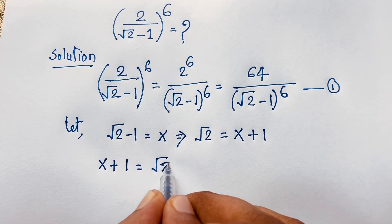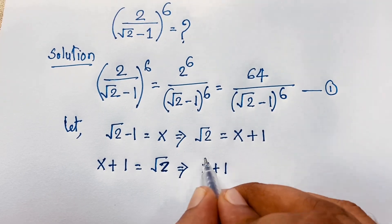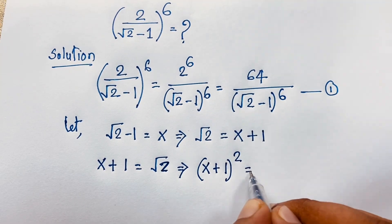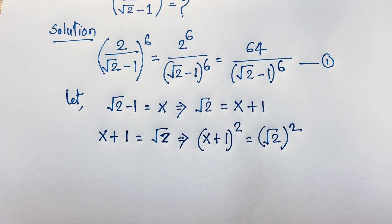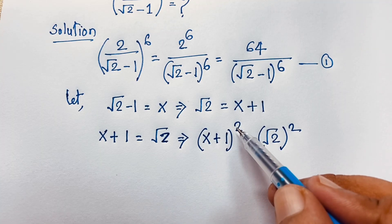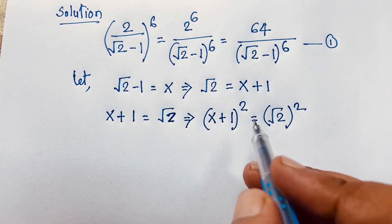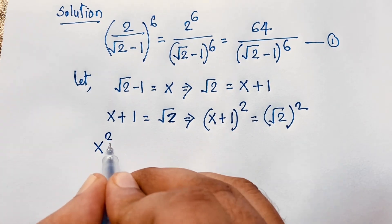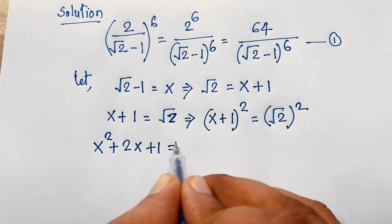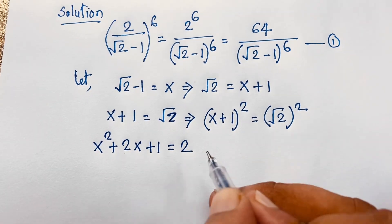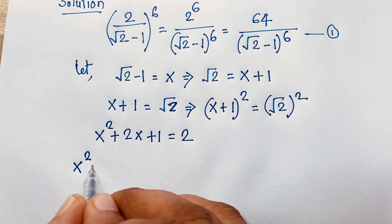Now I square both sides: (x plus 1)^2 equals (√2)^2. Using the formula (a+b)² = a²+2ab+b², this expression becomes x² plus 2x plus 1 equals 2 — the square root is cancelled.